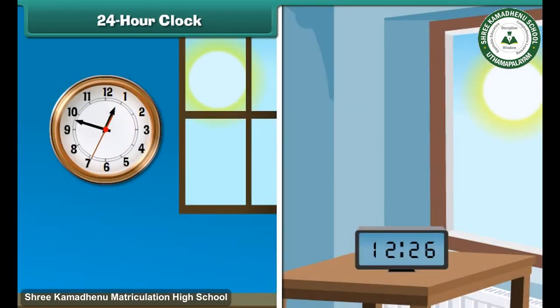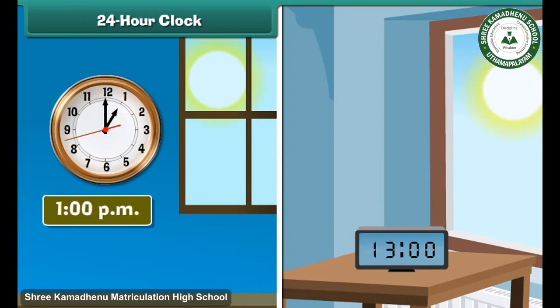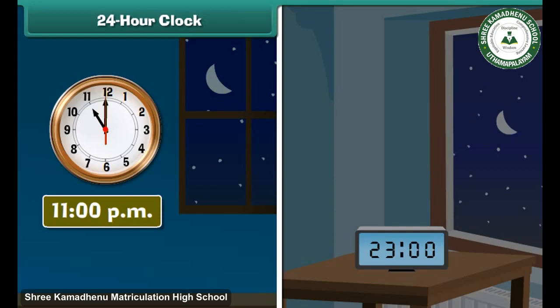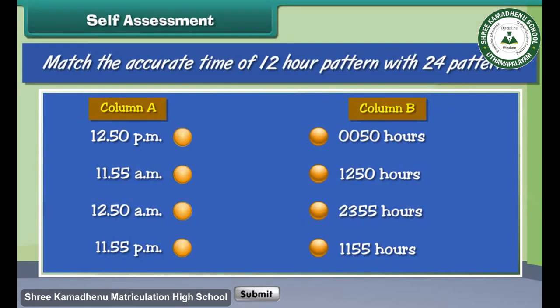After 12 noon, the two clocks differ in their representation of time. 1 p.m. on the 12-hour clock is represented as 1300 hours on the 24-hour clock. 1300 is nothing but 1200 plus 0100. Similarly, 11 p.m. can be converted using the same method. Self-assessment: Match the accurate time of the 12-hour pattern with the 24-hour pattern.